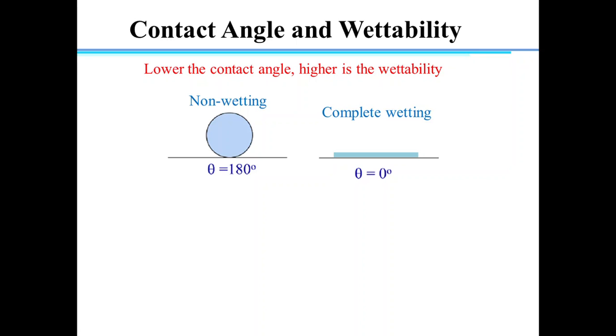So, in case of perfect wetting, we have theta that is equal to 0 degrees. Whereas in case of perfect non-wetting, theta is 180 degrees. But in most cases, we have something in between these two, where theta is between 0 and 180 degrees.